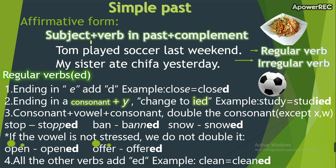The structure for the affirmative form is: Subject — we can say I, we, you, they, he, she, it, or my brother, your neighbor, or Tom — then the verb in past, and then the complement. For example: 'My sister played soccer last weekend.'